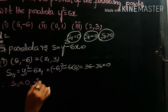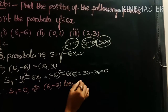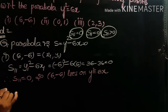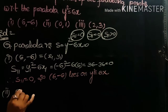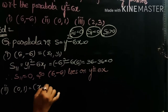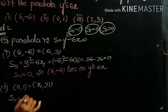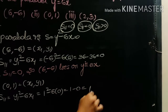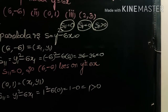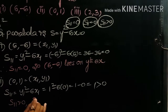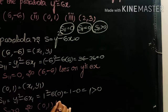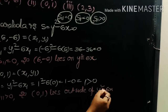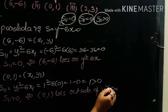Since S₁₁ = 0, the point (6, −6) lies on the parabola y² = 6x. For the second point (0, 1), we compute S₁₁ = y₁² − 6x₁ = 1² − 6(0) = 1, which is greater than 0. Therefore S₁₁ > 0, and the point (0, 1) lies outside the parabola y² = 6x.